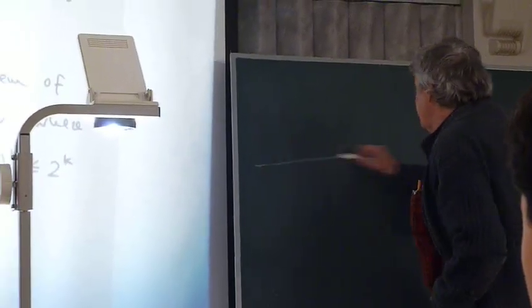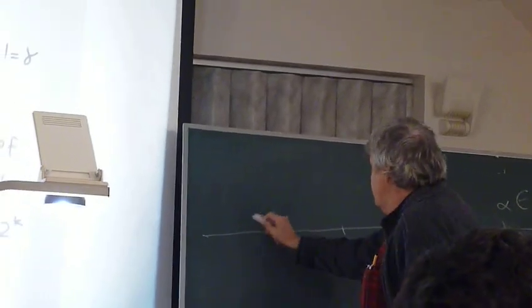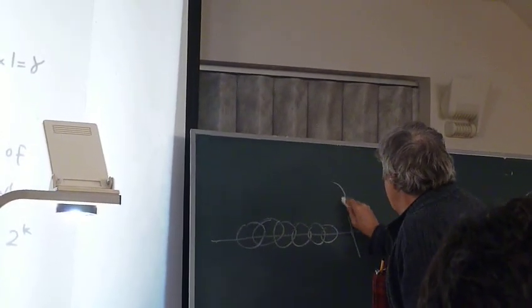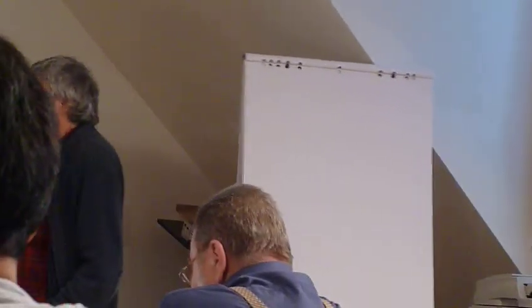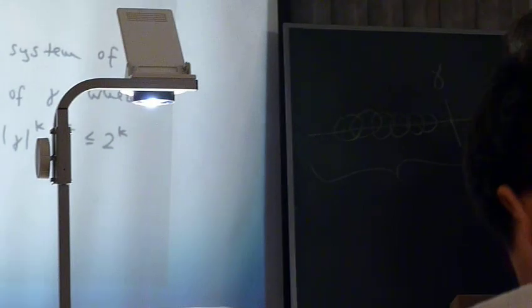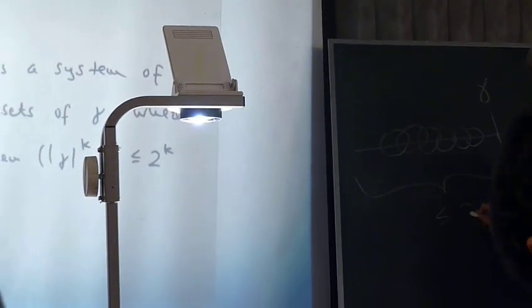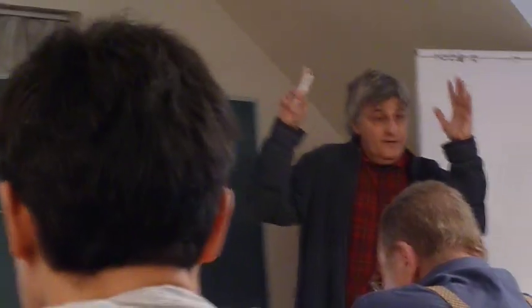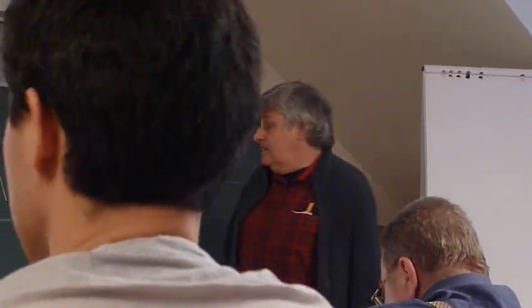So for each element alpha in S prime, these partly built homogeneous sets are below the same ordinal gamma. How many possibilities do we have for these? Well, gamma is a fixed set of cardinality at most 2 to the kappa. This is where the choice of 2 to the kappa plus in the theorem is used.